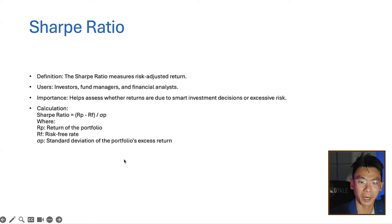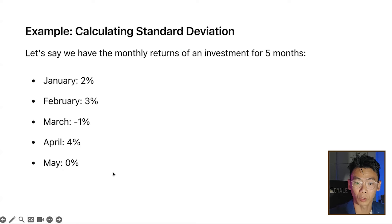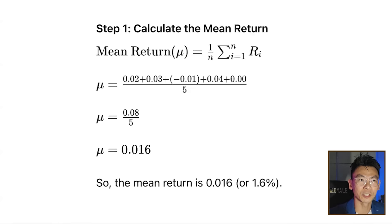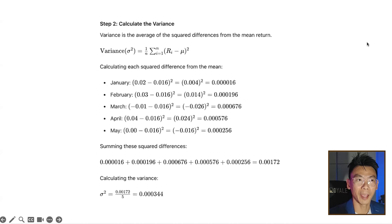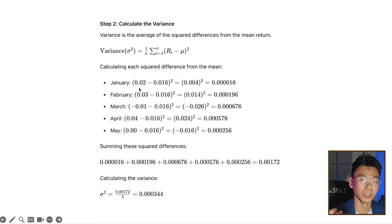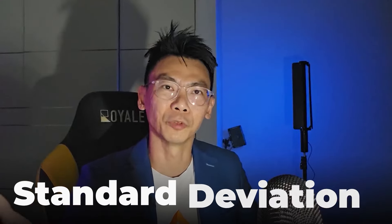Let me explain what standard deviation is. Say every month our returns are 2%, 3%, -1%, 4%, and 0%. First, we calculate the average return per month — adding the 5 months' returns together and dividing by 5. That gives us the mean, which is 1.6% per month in this example. The next step is to calculate each month's return compared to the mean — for example, in January we made 2%, minus 1.6%. This shows how much each month's return fluctuates from the average. The amount it fluctuates from the average is the variance, and the square root of the variance is the standard deviation.